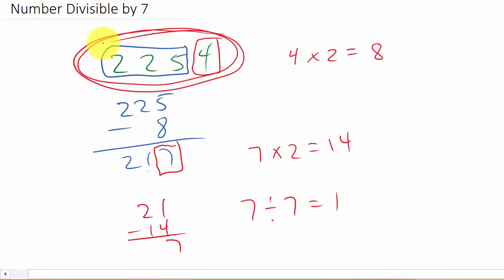So once you double this, subtract it from the remaining digits, and you get this number. Well, if it's too big to see if 7 divides into it again,